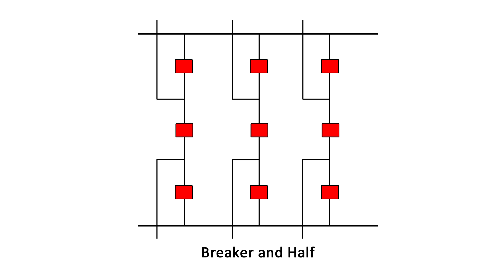If a middle circuit breaker fails, the adjacent breakers are also tripped to interrupt both circuits. If a breaker adjacent to the bus fails, tripping of the middle breaker will not interrupt service to the circuit associated with the remaining breaker in the chain. Only the circuit associated with the failed breaker is removed from service.